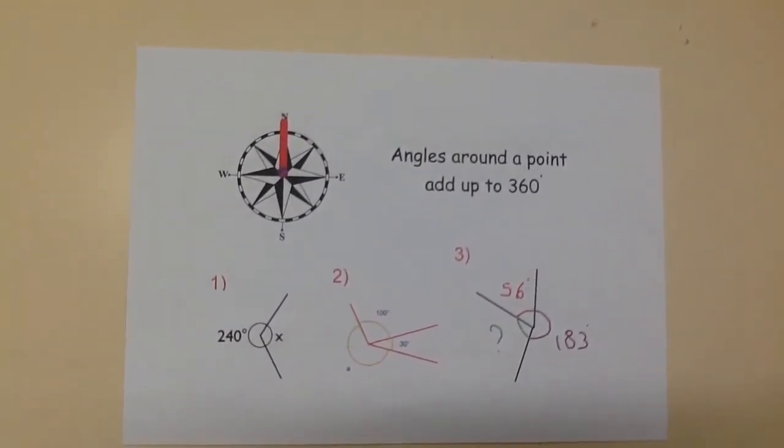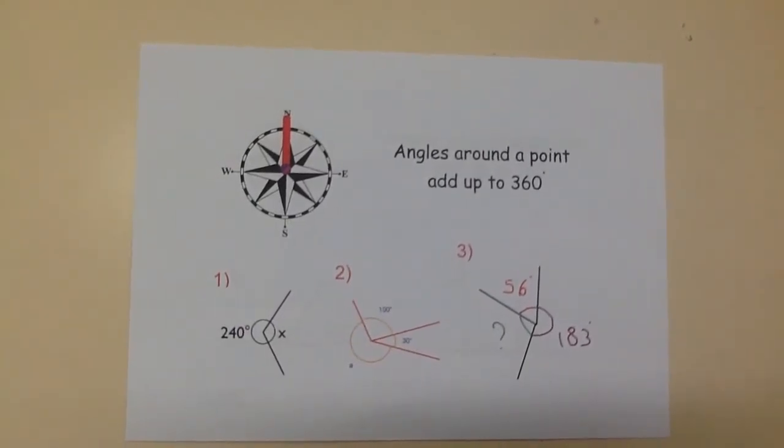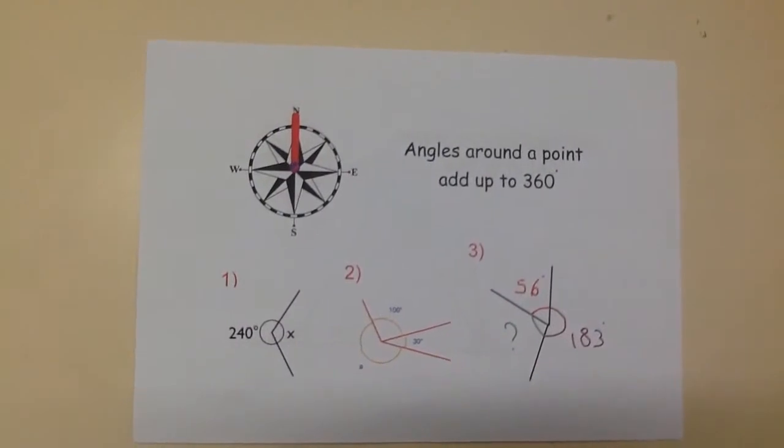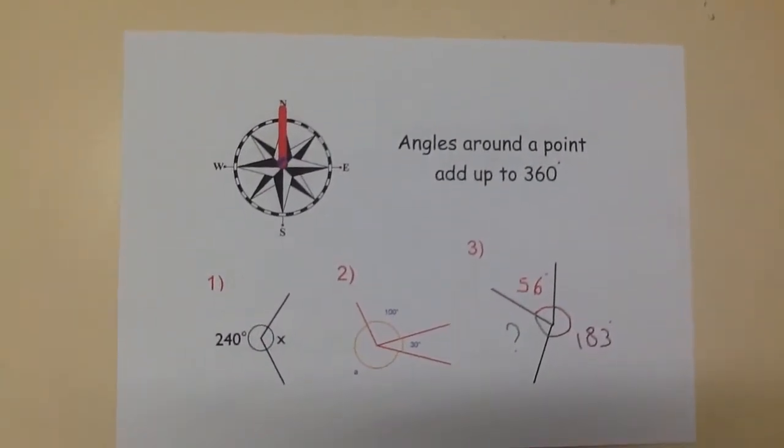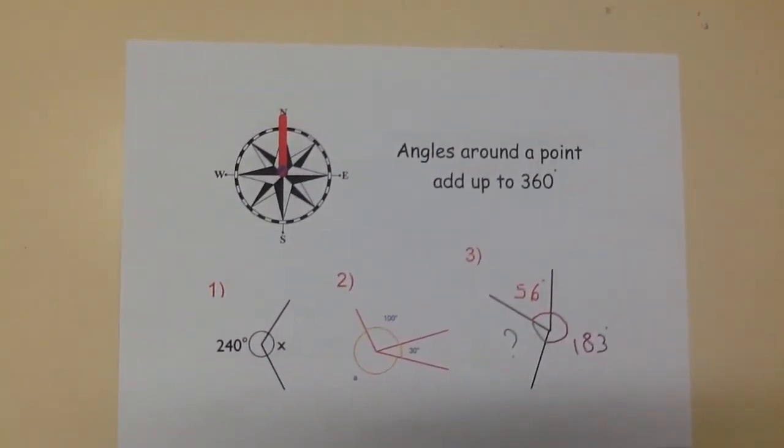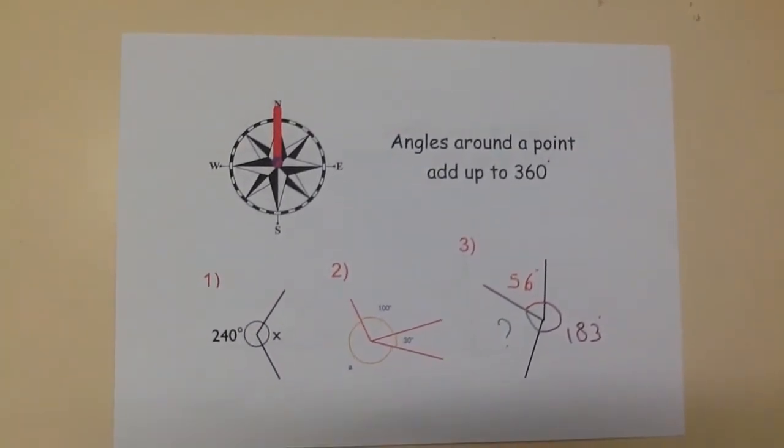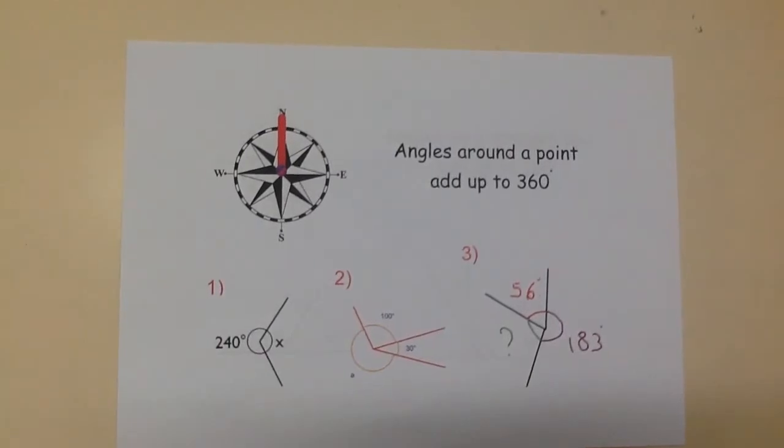For questions number 2 and 3, we add together the angles that we know and then subtract them from 360. So for question 2, we add together the angles to make 130, and then we subtract this from 360, which tells us the remaining angle is 230 degrees.